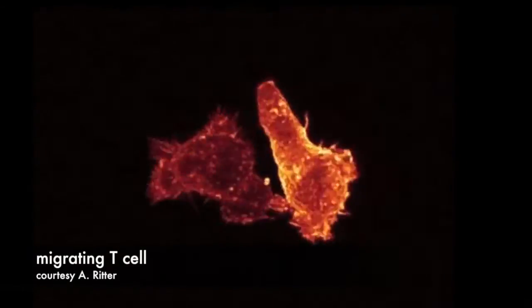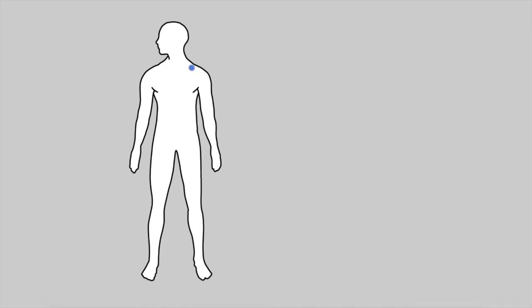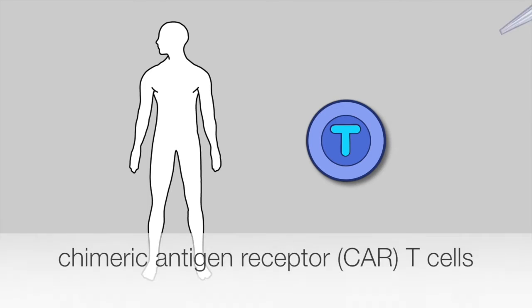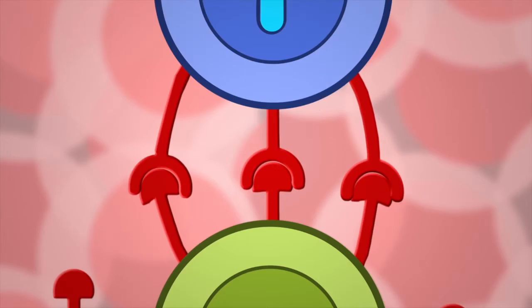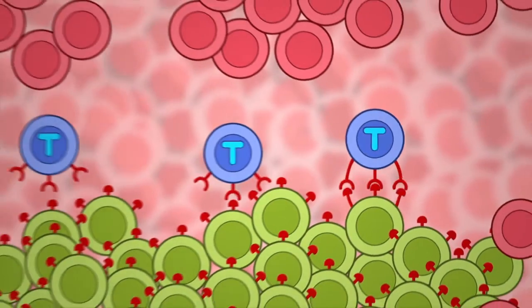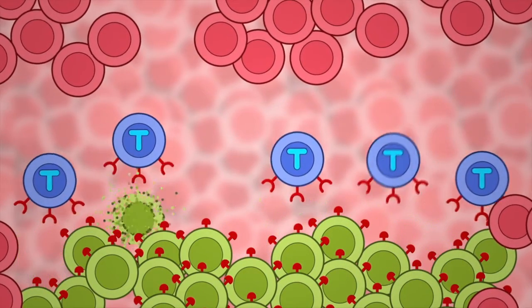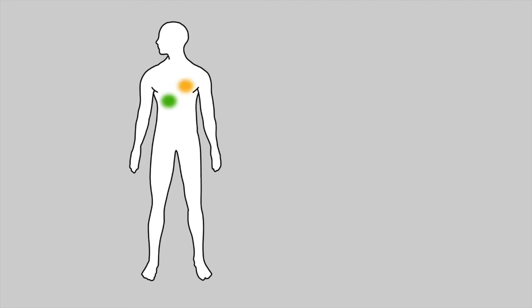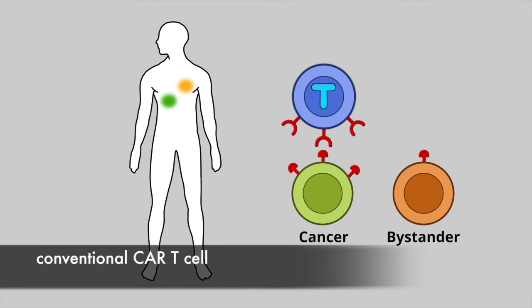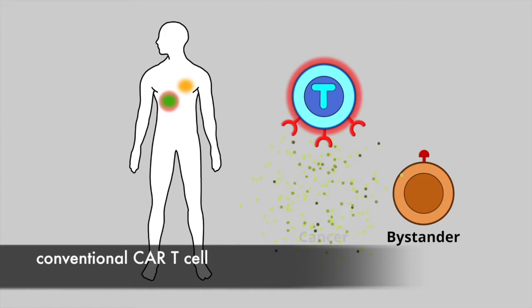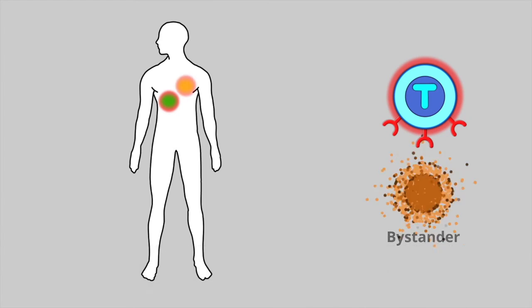We were particularly interested in using SynNotch receptors in T cells. One of the most exciting developments in the last few years is the use of chimeric antigen receptors, or CARs, to redirect T cells to find and kill cancer cells based on recognition of a specific cancer antigen. A major limitation of CAR T cells is that although they will kill cancer cells effectively, if normal bystander cells also express the target antigen, they can be killed, resulting in potentially lethal side effects.